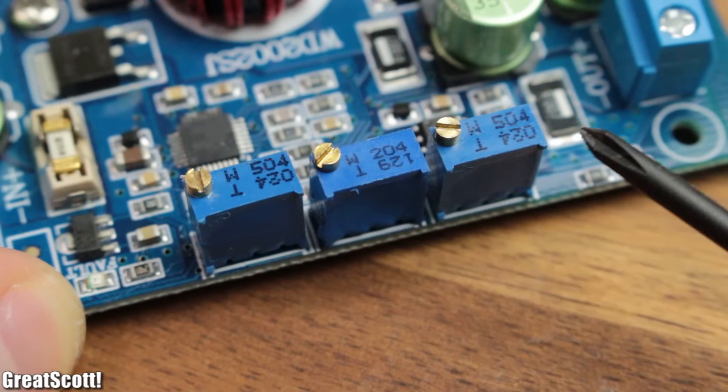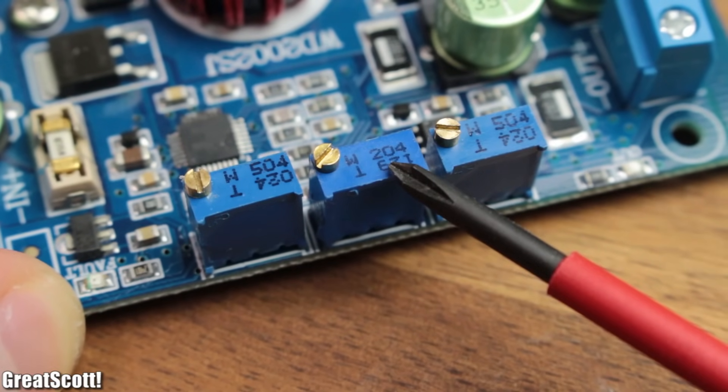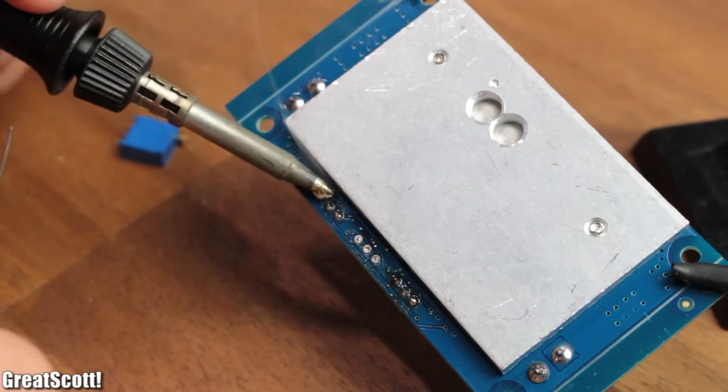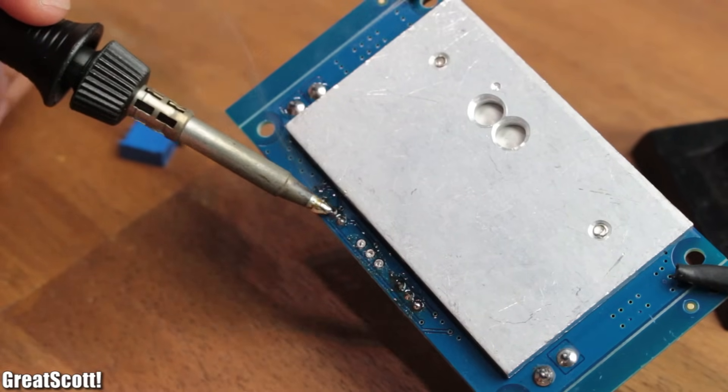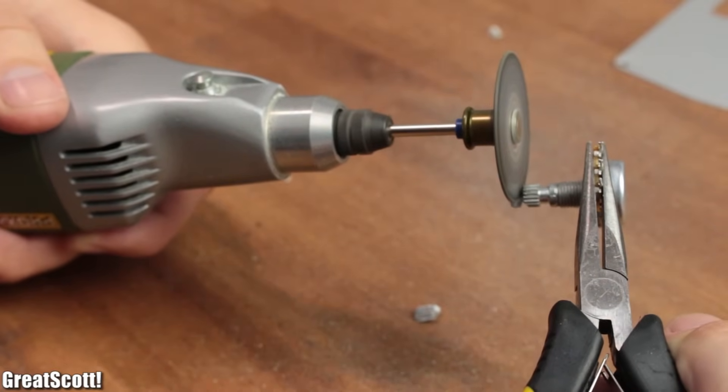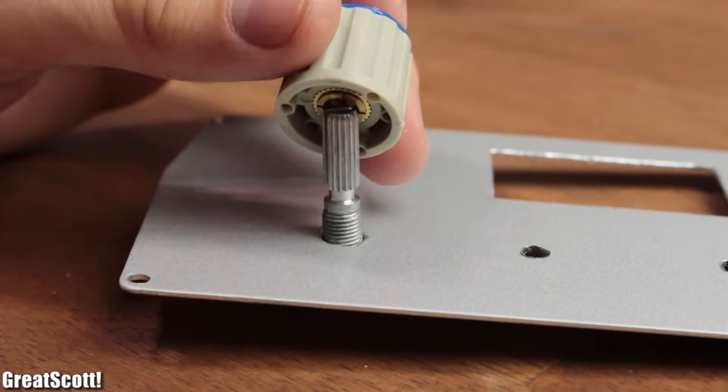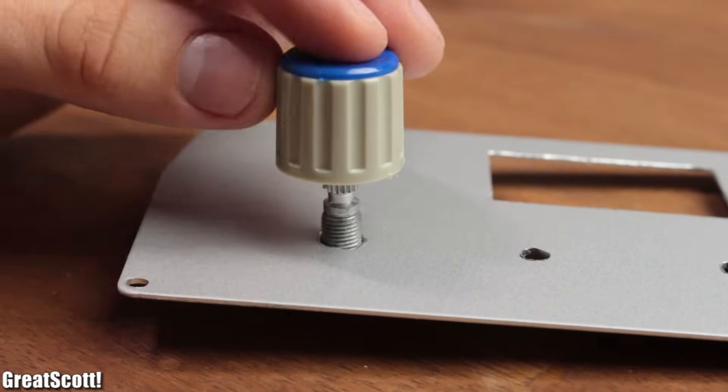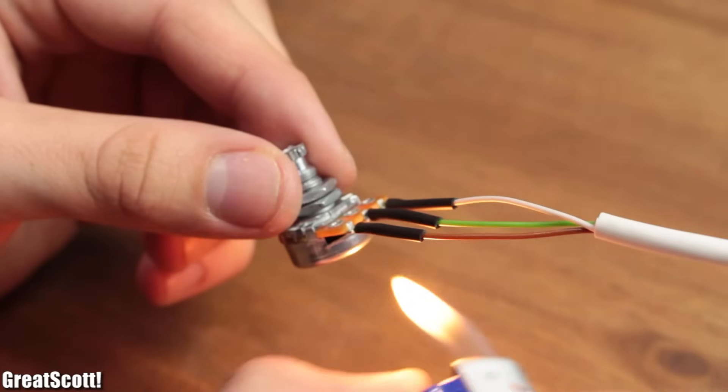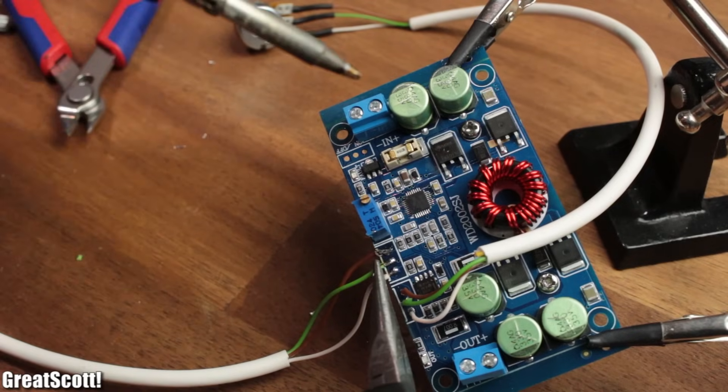Firstly, let's replace the 500 kilo ohm and 200 kilo ohm potentiometer of the LTC 3780. I just heated up the pins of the pots and shortly after they fell out on their own. Afterwards, the shaft of the new potentiometers got shortened with my rotary tool. Because the knobs would otherwise stick too far out when mounted. Then I soldered three wires to my new pots, added shrinking tube and soldered those wires to the solder joints of the old ones.